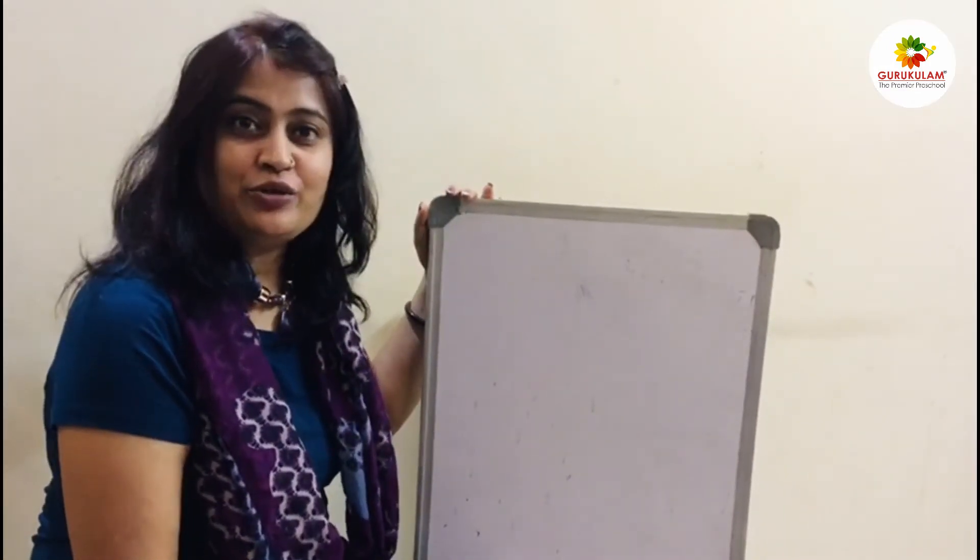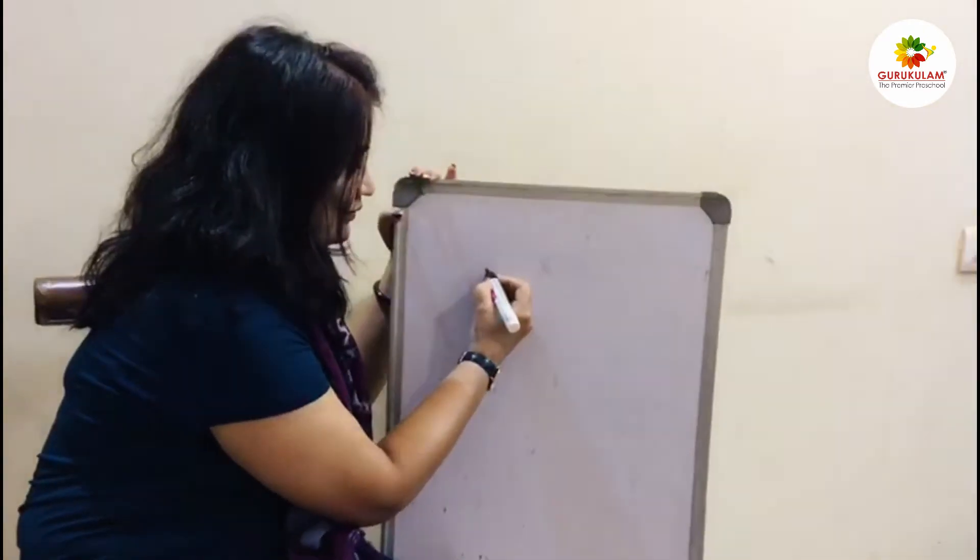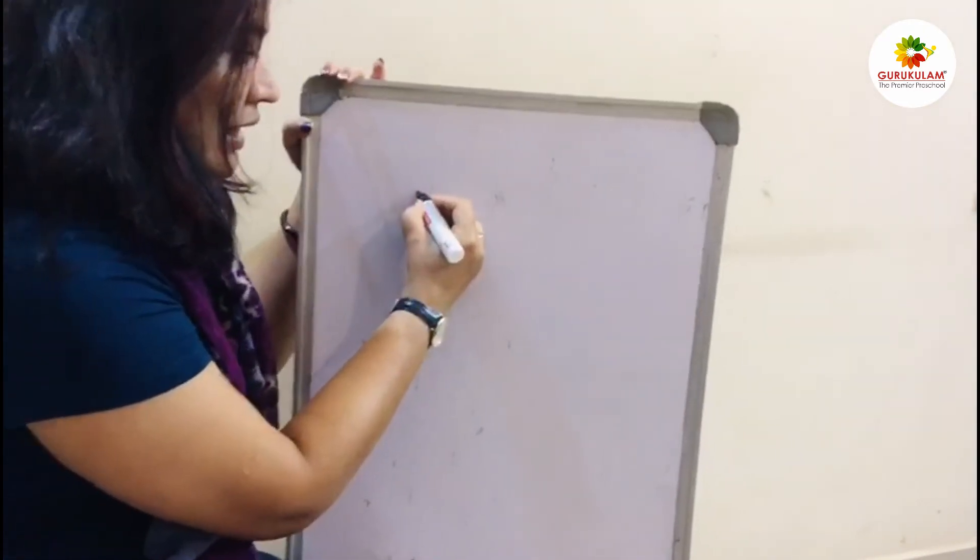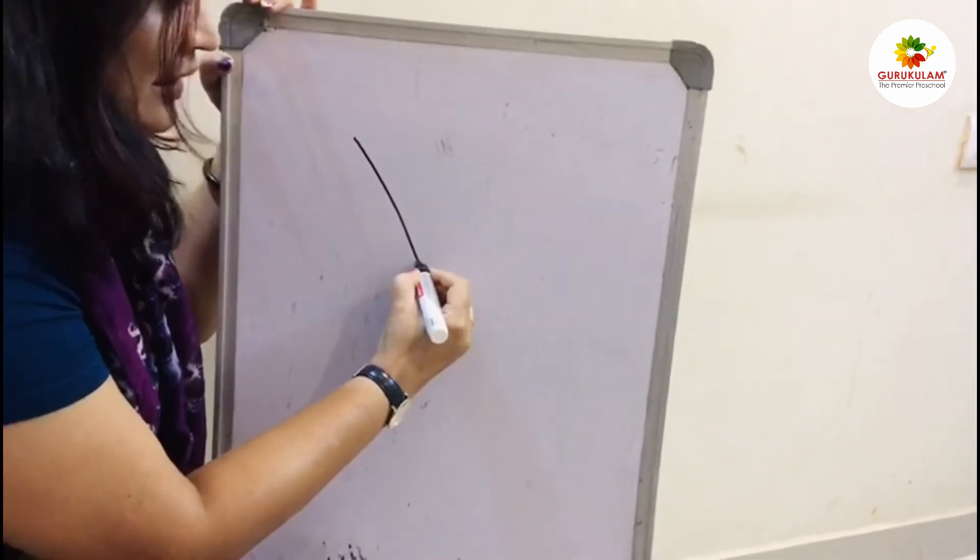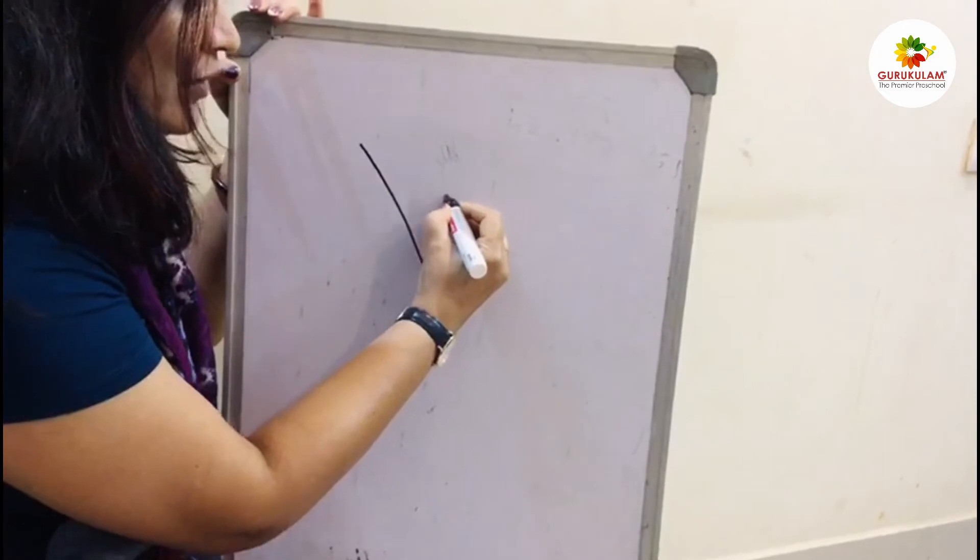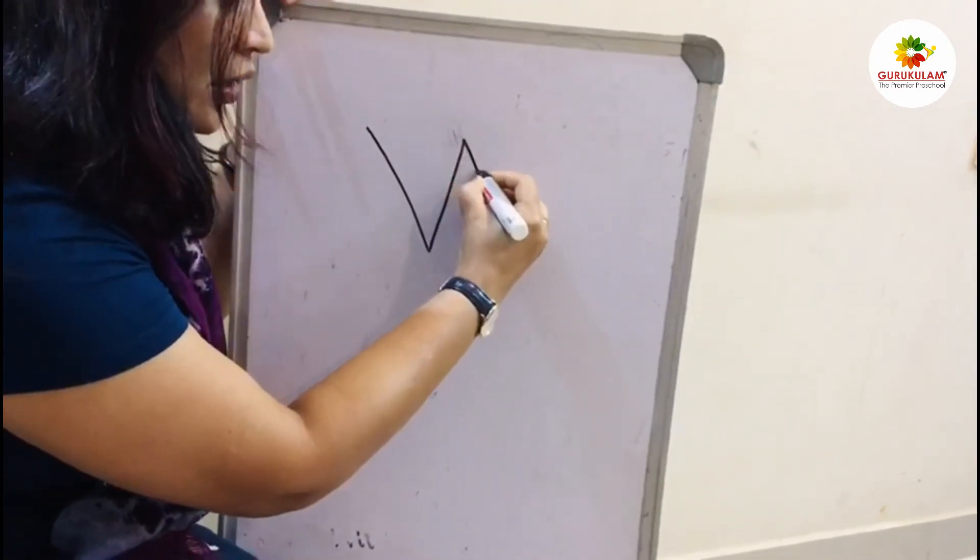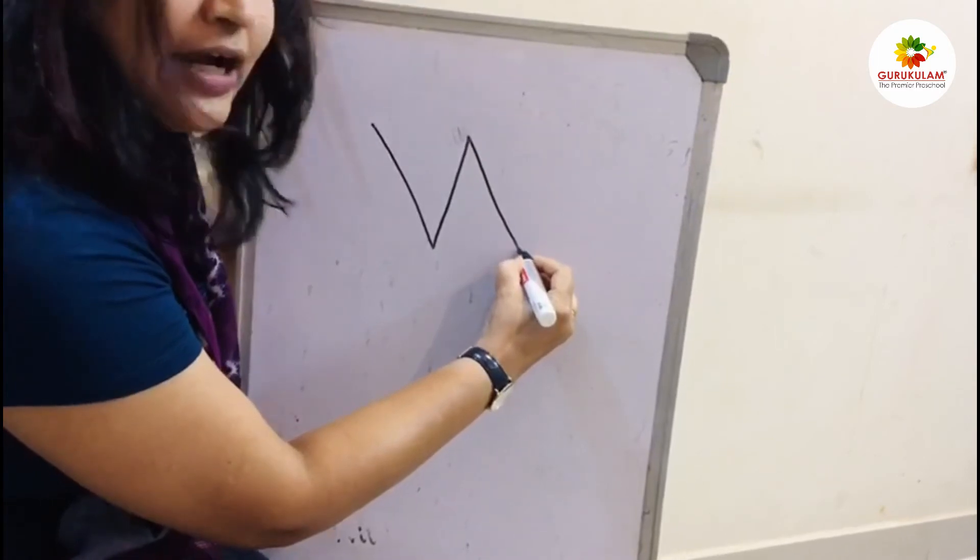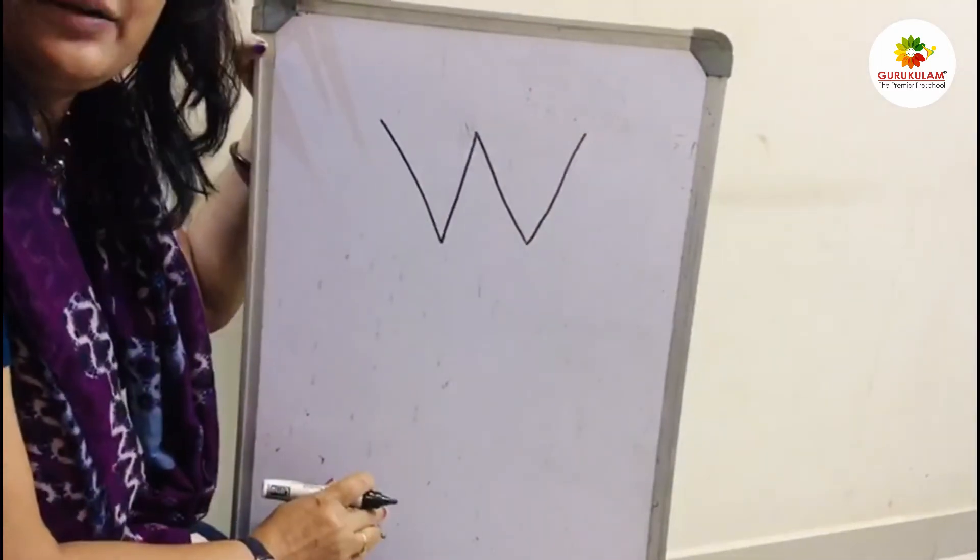Now kids I will show you how to write W. Up to down, one slanting line and down to up, one more slanting line. Again up to down, slanting line and down to up, slanting line. It's W.